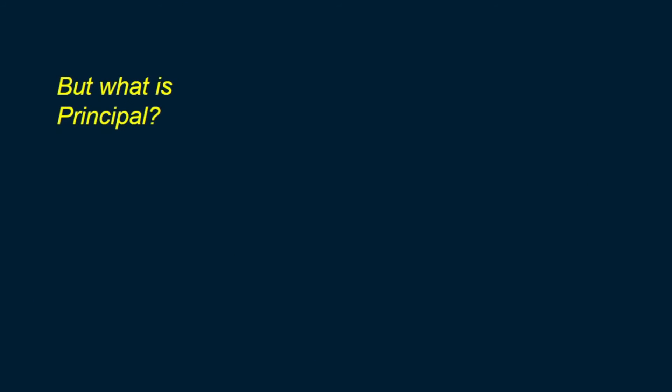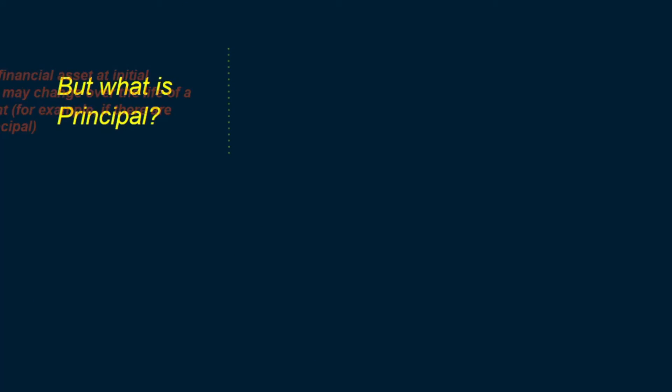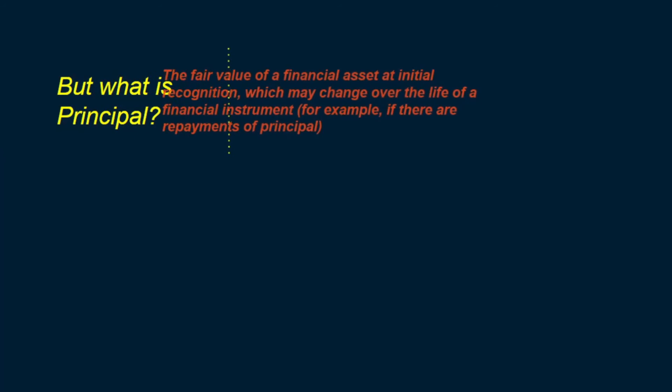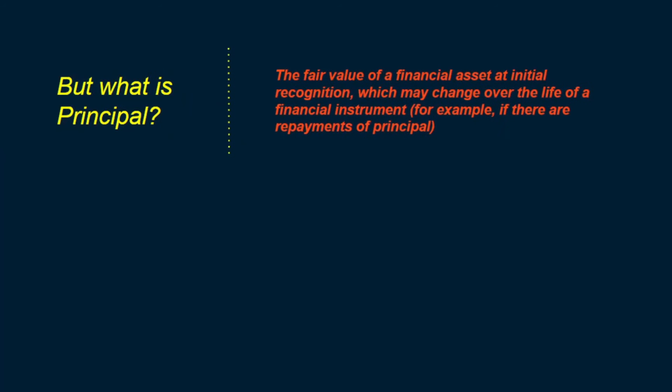We've looked at interest from various angles and what it should look like in a basic lending arrangement, but have we even defined principal yet? IFRS 9 defines principal as the fair value of a financial asset at initial recognition, which may change over the life of the financial instrument — for example, when there are repayments of principal.